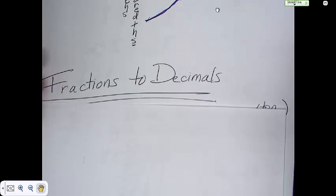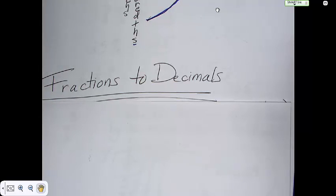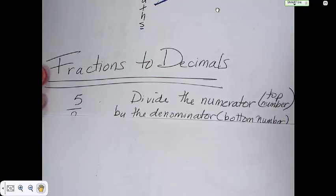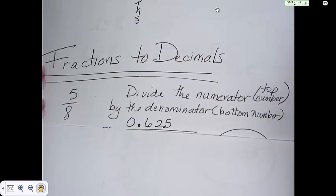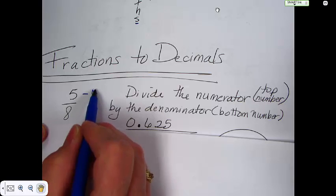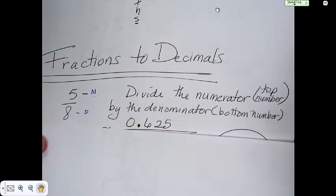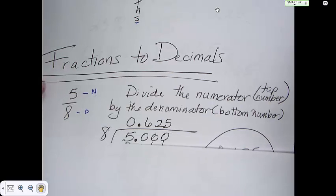Next thing we want to do is take fractions to decimals. You know how to do this. Just take the numerator divided by the denominator. And the rule is, divide the numerator, which of course is this number, and you're going to divide it by the bottom number, which is the denominator. So here we go. We have 5 eighths. 5 goes inside, 8 goes on the outside.